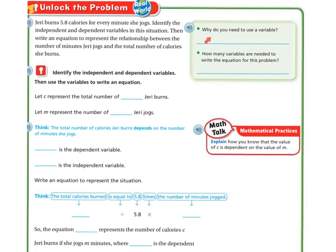So why do you need to use a variable? You need to use a variable to represent an unknown value, just like we did last time when we were using equations and they put in the letter A, the letter B, or the letter V.